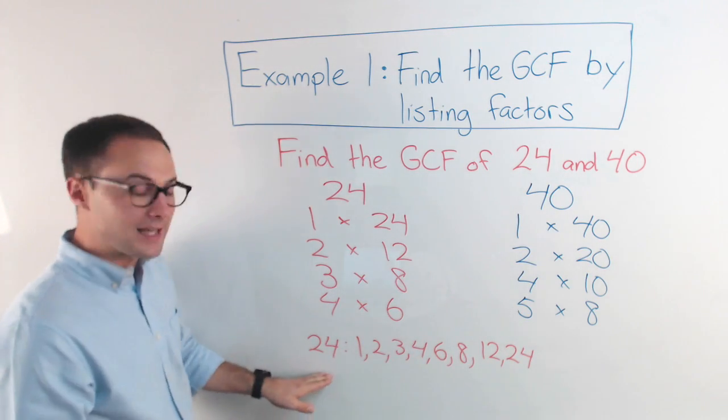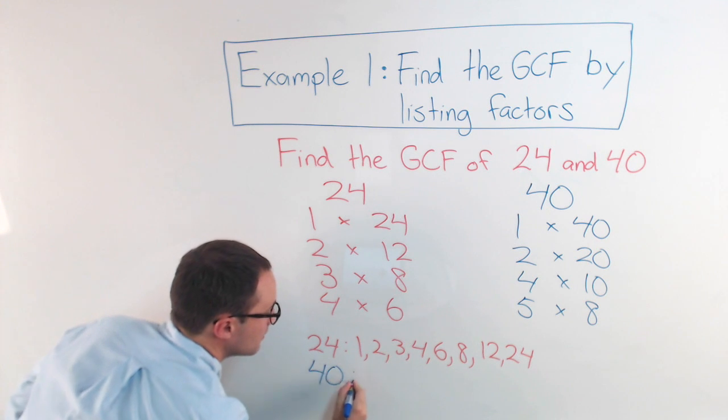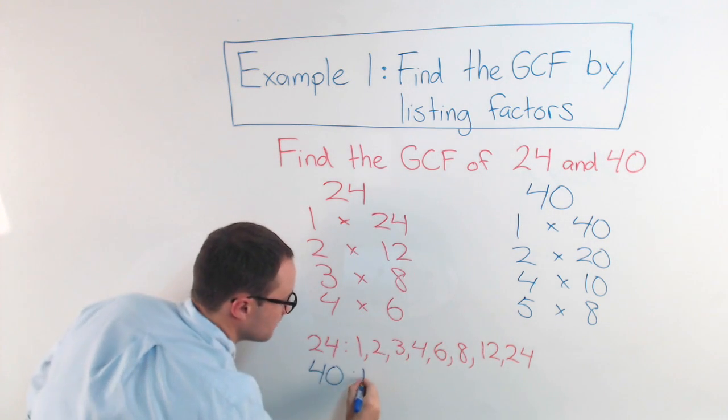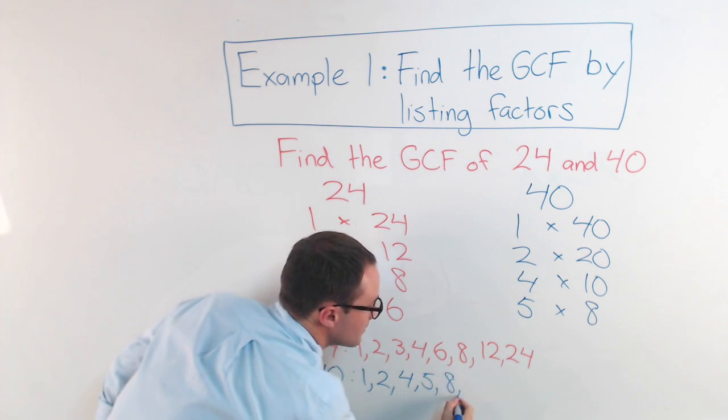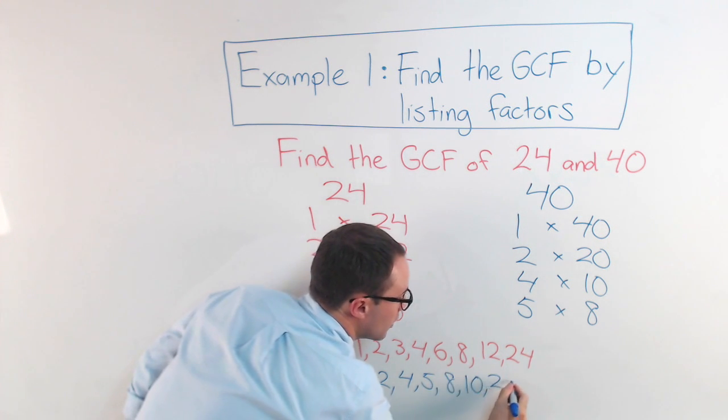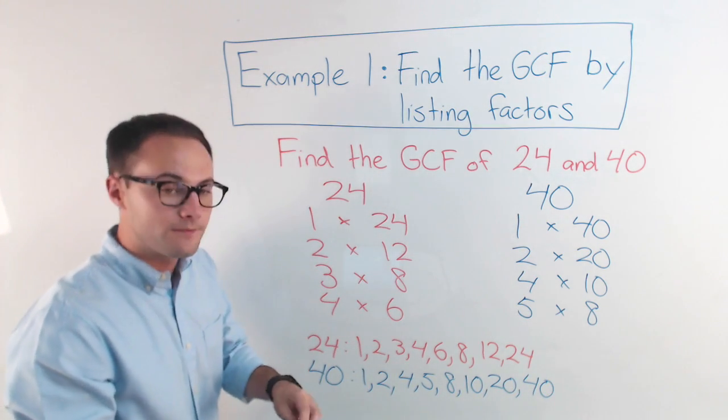I'm going to do the same thing and list my factors down here. So 40 in order. 1, 2, 4, 5, 8, 10, 20, and 40. Those are my factors for 40.